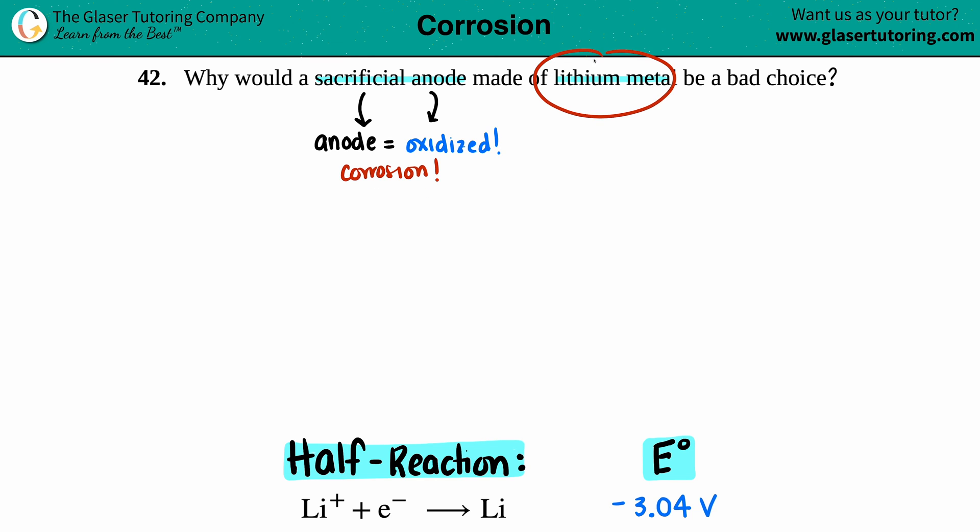Now the question is, is lithium a good choice to have corrode? Well, the answer lies in the half-reaction cell potential of the lithium value. For lithium, you have a cell potential of negative 3.04 volts.